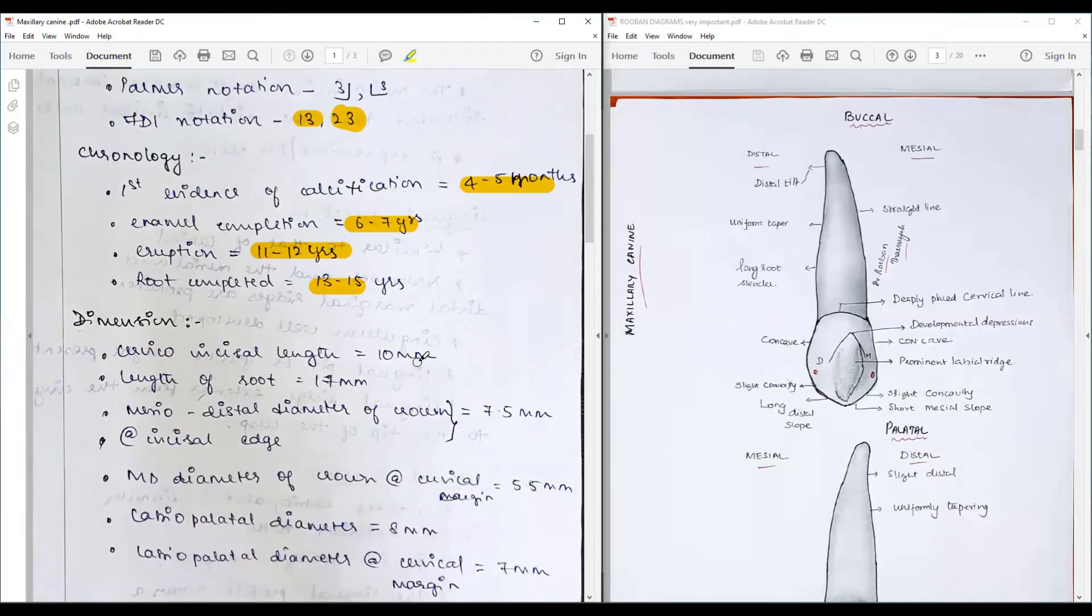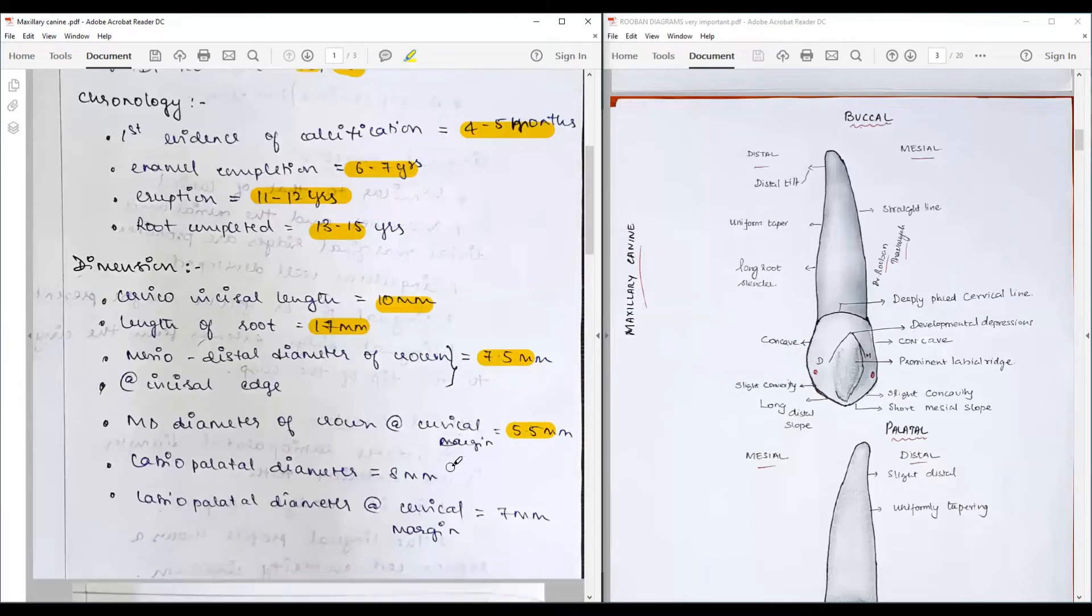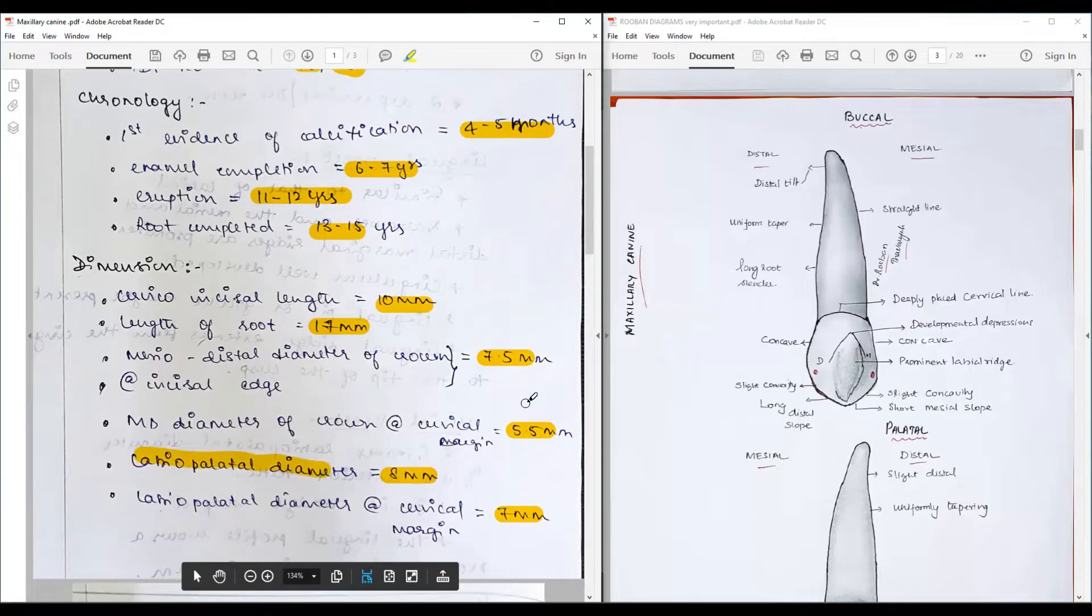Going to the dimensions: The cervico-incisal length is about 10 mm and the length of root is about 17 mm, making this the longest tooth. At the incisal edge, the mesiodistal diameter is 7.5 mm and 5.5 mm, whereas the labio-palatal diameter is about 8 mm at its broadest end. At the cervical third, it is labio-palatally more broader than mesiodistally.